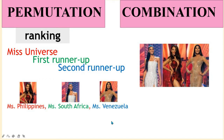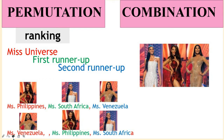— that is different from Miss Venezuela as Miss Universe, Miss Philippines as first runner-up, and Miss South Africa as second runner-up. In this case, this is permutation because the order matters.